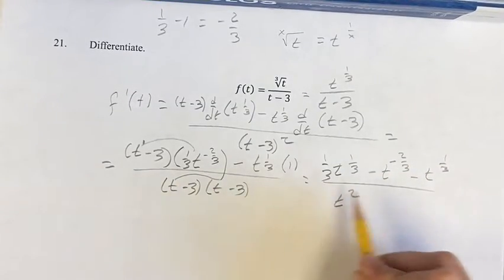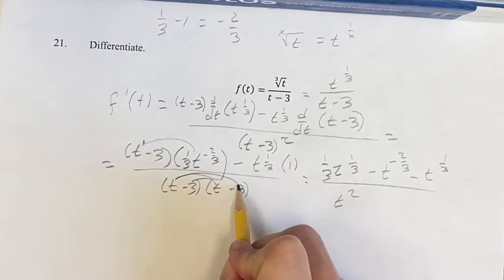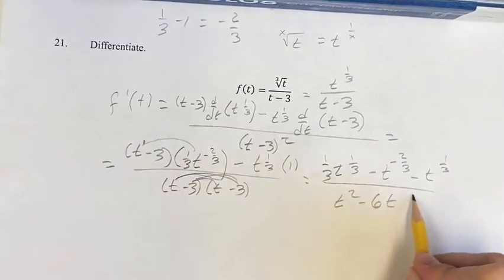This is over t squared minus 3t minus another 3t, which is minus 6t, plus 9.